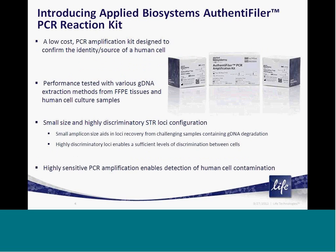To help researchers efficiently and cost-effectively track the identities of their cell lines, we have created the Authentifiler PCR Amplification Kit. The kit is a low-cost PCR amplification kit designed to confirm the identity of a human cell used in cell culture or induced pluripotent stem cell research. The kit is based on short tandem repeat chemistry and contains all reagents needed to amplify nine STR loci plus the sex-determining marker ameliogenin from your genomic DNA extract.